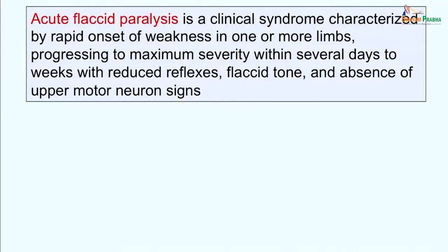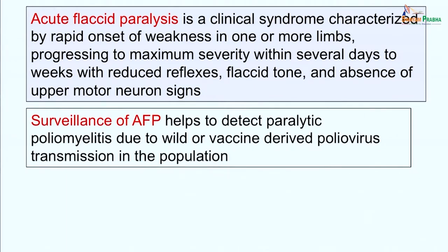Acute flaccid paralysis is a clinical syndrome characterized by rapid onset of weakness in one or more limbs, progressing to maximum severity within several days to weeks, with reduced reflexes, flaccid tone, and absence of upper motor neuron signs. The surveillance of acute flaccid paralysis helps to detect paralytic poliomyelitis due to wild as well as vaccine derived poliomyelitis transmission in the population.